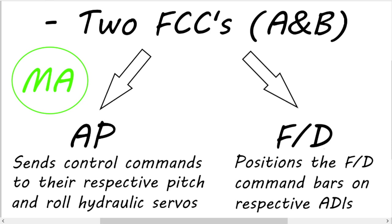So what actually is the flight director and what actually is the autopilot? The flight director is basically where all the thinking goes on. The flight control computer works out what you want to do by taking the inputs from the mode control panel and transferring them into commands as to what the airplane is supposed to do — and that's all taking place in the flight control computer, not in the FMC. The two FCCs can position the flight director command bars on the respective ADIs independently, and they can send control commands to the respective pitch and roll hydraulic servos of the autopilot.